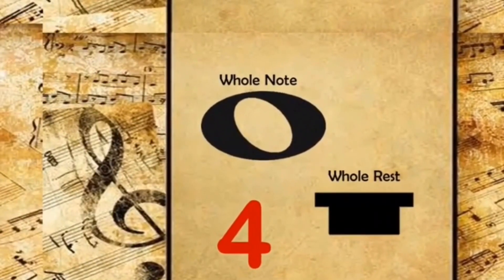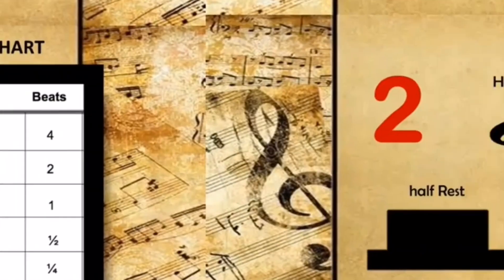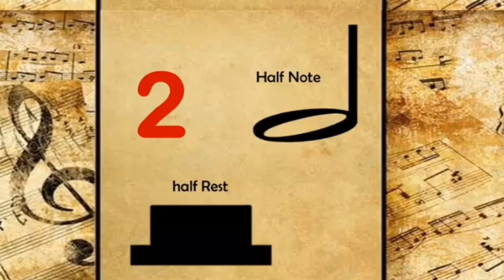These are the musical symbols of a whole note and a whole rest. Whole note gets 4 beats of sound and whole rest gets 4 beats of silence. These are the musical symbols of a half note and half rest. The half note receives 2 beats of sound and the half rest receives 2 beats of silence.